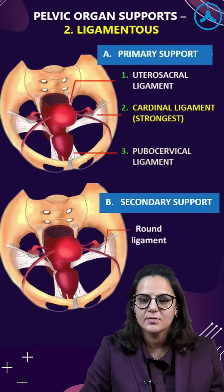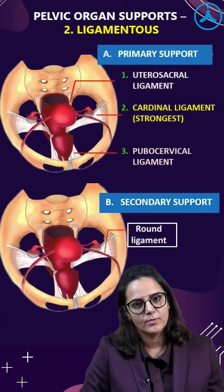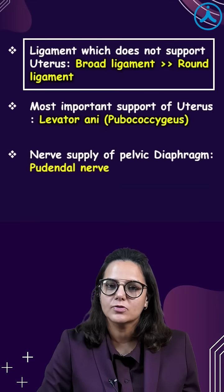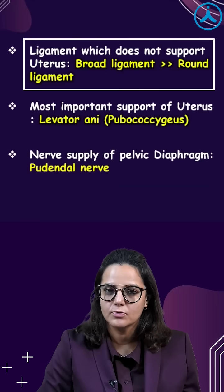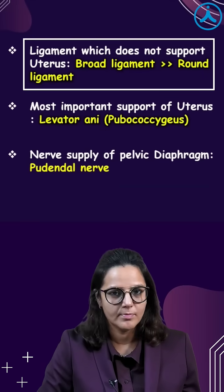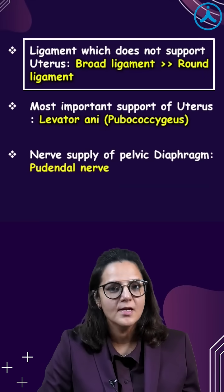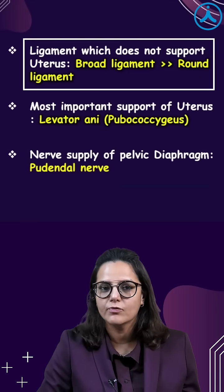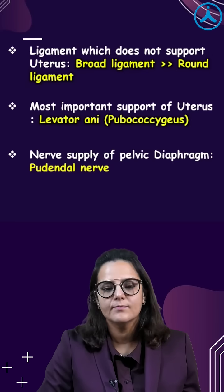In the secondary support, we have the round ligament. The ligament which does not support the uterus — the answer would be the broad ligament. If that is not in the options, then we go for the round ligament.